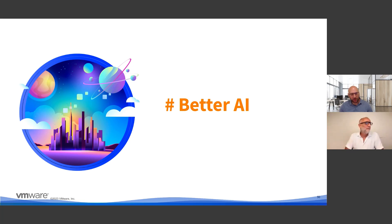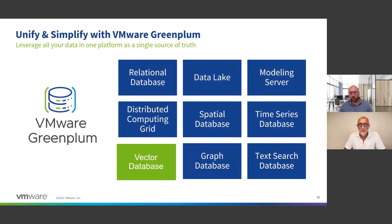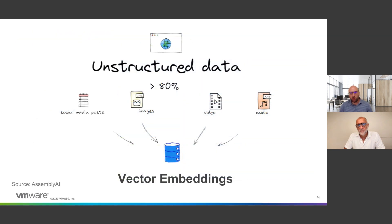Let's get into AI — it's exciting and it's changing everyone's opinion of what computers and technology can do. It's quite mind-blowing. We have added vector database capability into the wide breadth of capabilities that Greenplum has. So what does vector database give you? What is the benefit and what can you do with it?